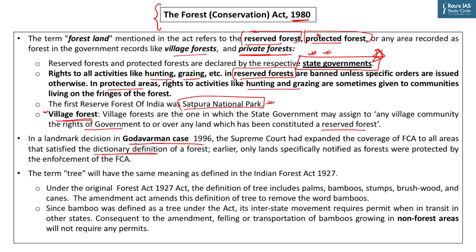Defining trees is fundamental to defining forests. The definition of tree that Forest Conservation Act 1980 has taken is the same as given in the Indian Forest Act 1927. The definition originally included palms, bamboos, stumps, brushwood, and canes. But two years back, the definition was amended to remove bamboo from the definition of trees so that interstate movement of bamboos would not require permits. Bamboo has been declared by the finance minister in the budget speech as 'green gold,' and to encourage the national bamboo mission, this step was taken.